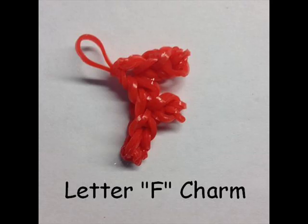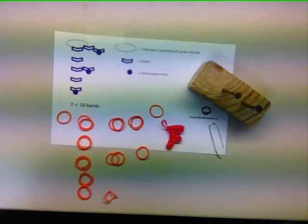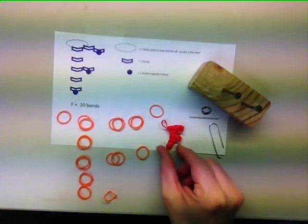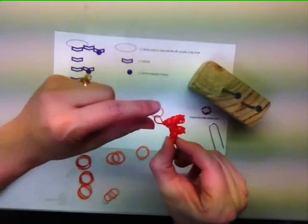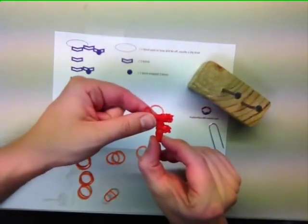Rubberbandbracelet.net. Today I'm going to show you how to make a letter F loom band charm. You can download the project instructions in the description below the video.